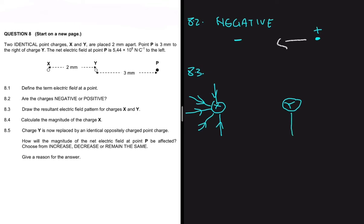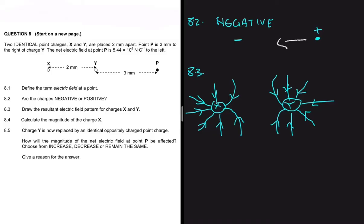Since Y is also negative and has the same magnitude as X, it should have the same number of field lines. Because they are like charges, they repel each other, and we must demonstrate that in the diagram. We can see they are negatively charged because the field lines point towards each charge, and it is easy to see that they are repelling.